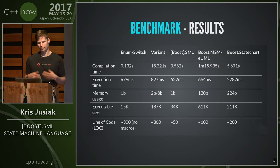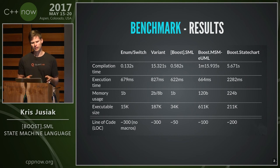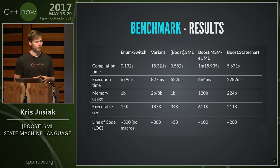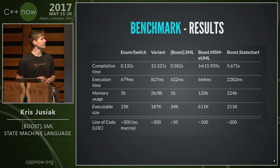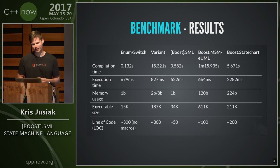Let's look at a comparison between different approaches. I implemented a benchmark which is more complex — about 50 states and hundreds of transitions — and implemented it using enum switch, variant, Boost.SML, Boost.MSM, and Boost.Statechart. For compilation time, switch is the fastest, but Boost.SML is not much slower. For execution time, SML is actually a bit faster than switch because there's no bounds checking.